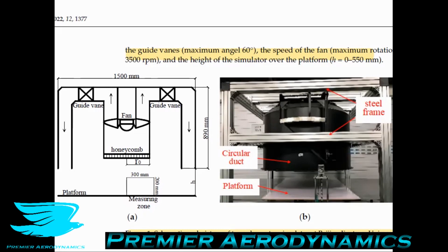In other words, you have a fan sucking air up, and then it goes around the edges of the structure and comes back down on the sides. As it hits the ground, all this flow converges to go back up into the fan, and this motion creates the swirling pattern and a tornado as a result. The tornado wind field can be adjusted by changing the angle of the guide vanes, the speed of the fan, and the height of the simulator over the platform.